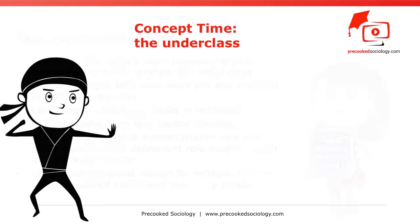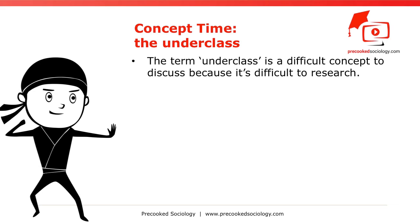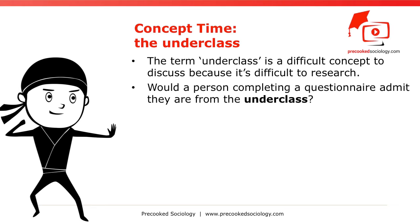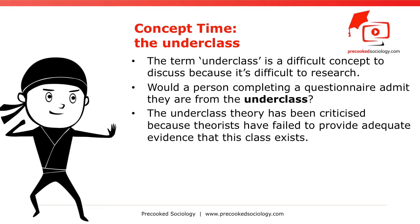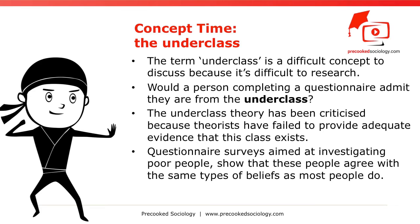The term Underclass is a difficult concept to discuss, often because it's highly loaded, but also because it's difficult to research — for example, would a person completing a questionnaire or being interviewed admit they are from the Underclass? The Underclass theory has been criticized because theorists such as Charles Murray have failed to provide adequate evidence that this class exists. Questionnaire surveys aimed at investigating poor people show that these people agree with the same types of beliefs as most people do.